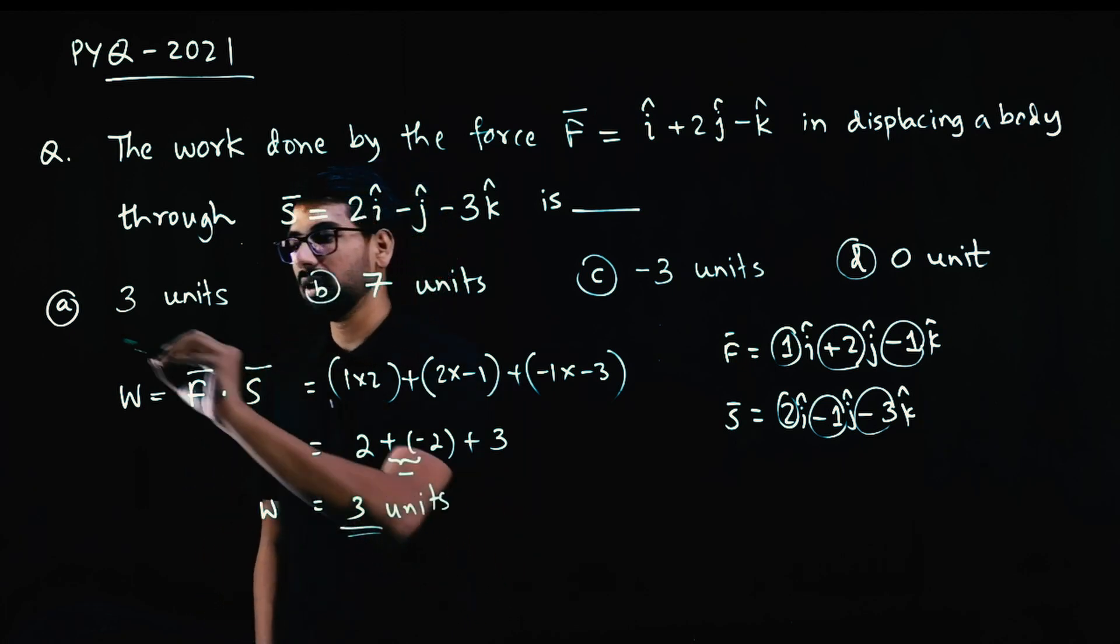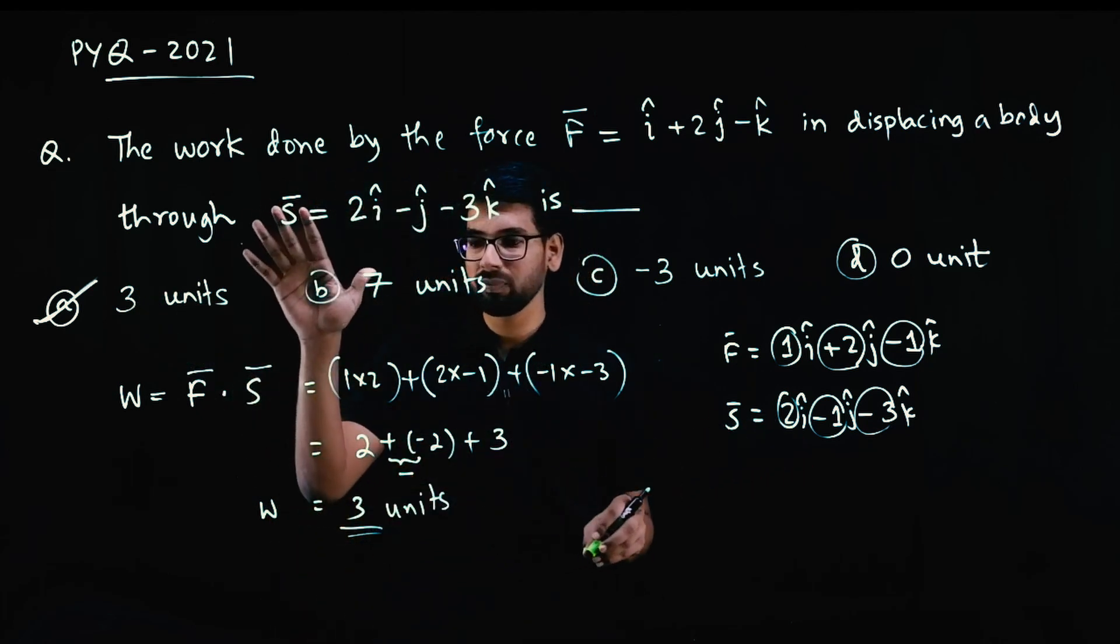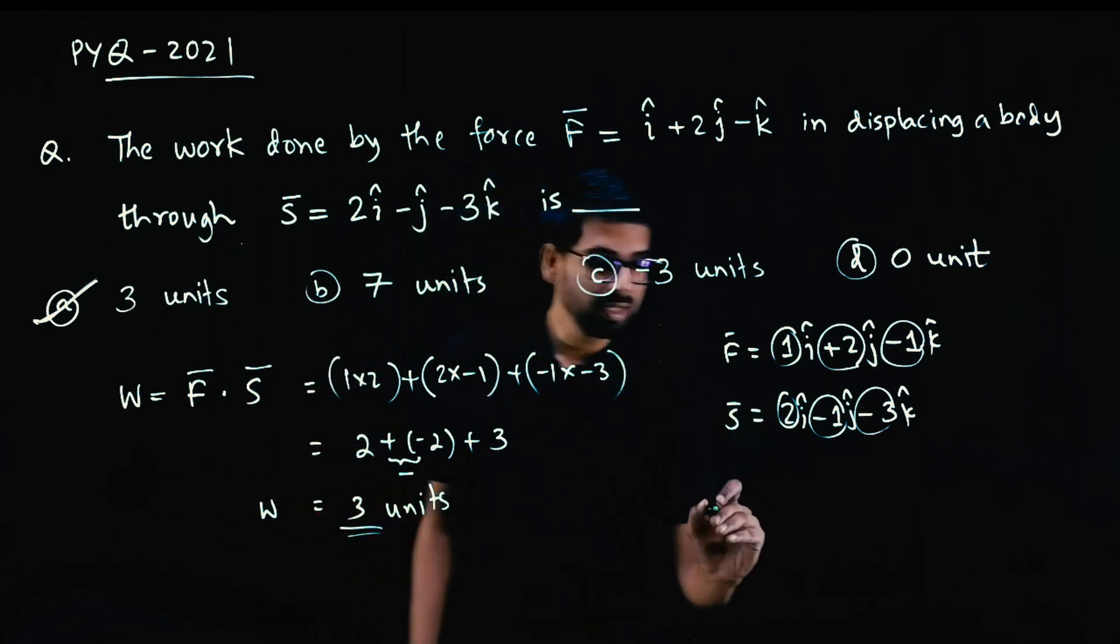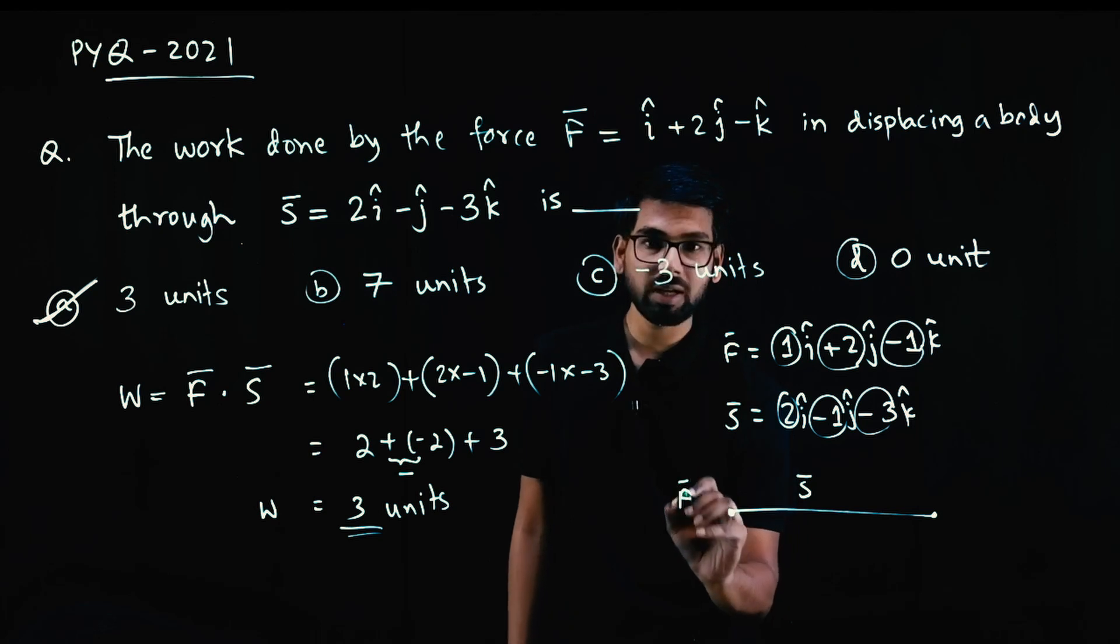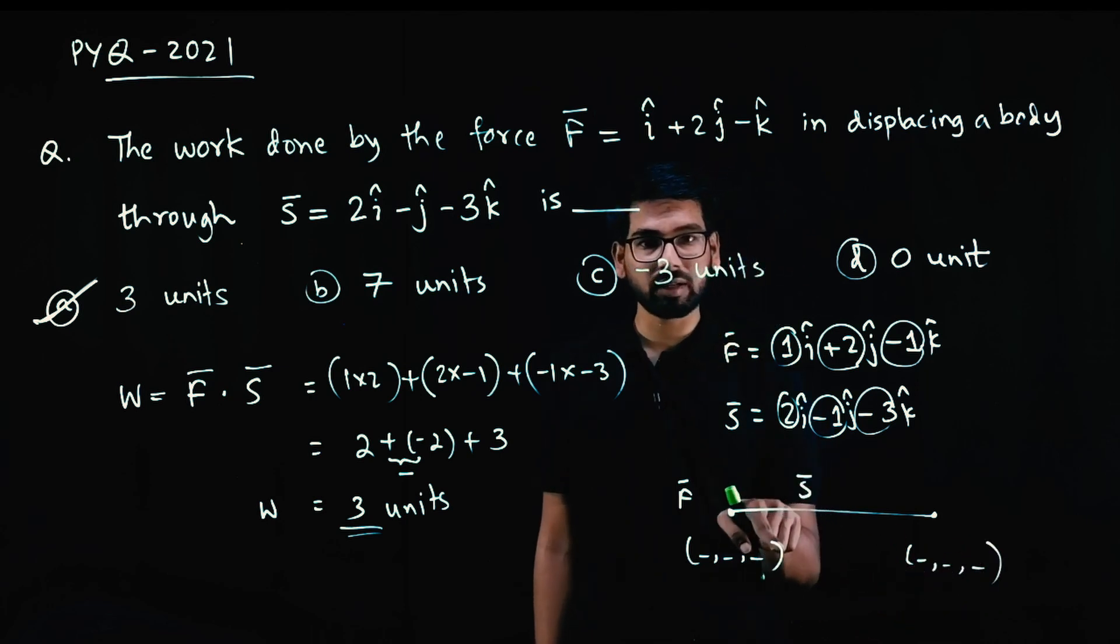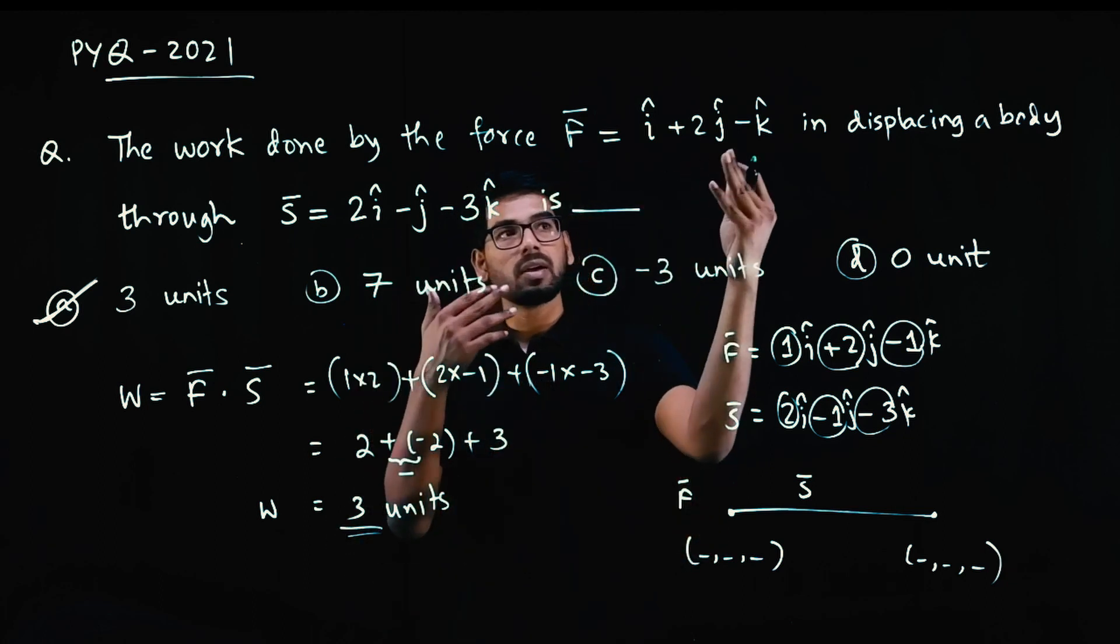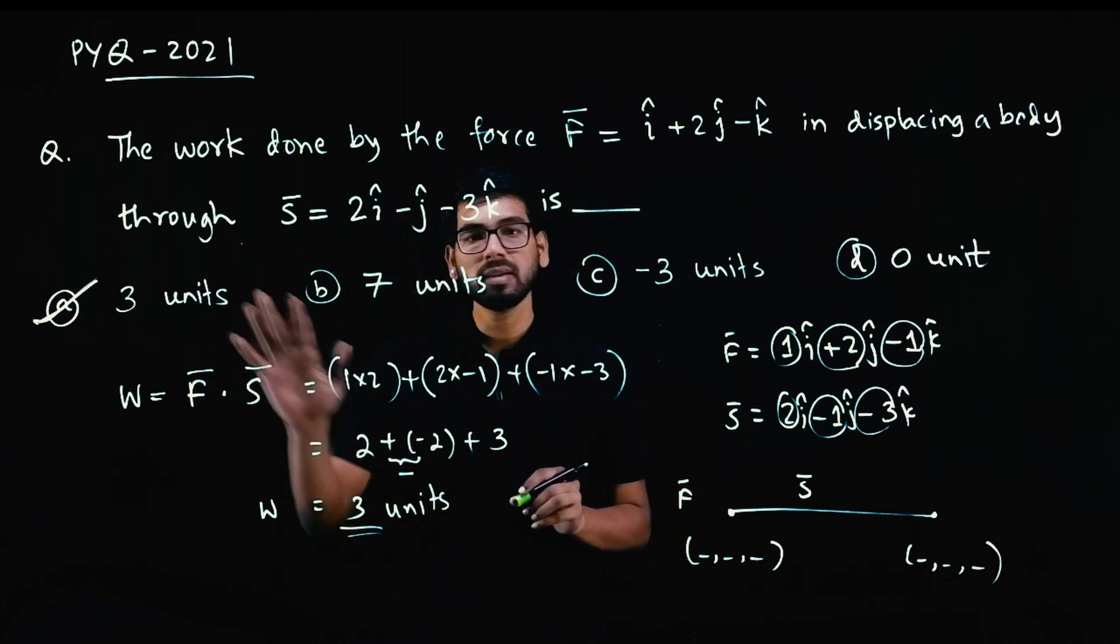So work done is 3 units, 3 units. That is the answer. 2021 has very very easy questions. 2018 questions were not like this. Here they directly gave F bar as a vector and S bar as a vector. Usually they give a point here and another point here. You need to find the S bar vector and then do dot product. Here directly he has given force vector and displacement vector. Just we have to take dot product. So answer is 3 units.